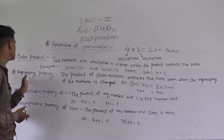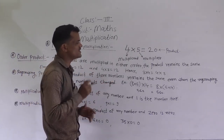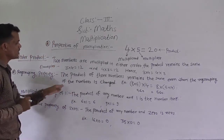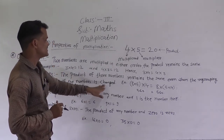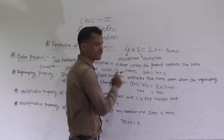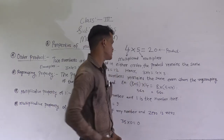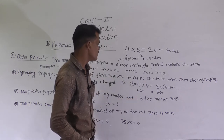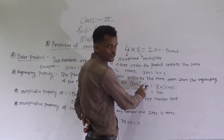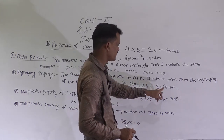The second property is the regrouping property. The product of 3 numbers remains the same even when the regrouping of the numbers is changed. Here, in bracket 8 into 5 — this is one group — and out of the bracket, multiplied by 4. So 8 5s are 40, then 40 into 4 is 14. 40 into 14 is equal to 8 in bracket.